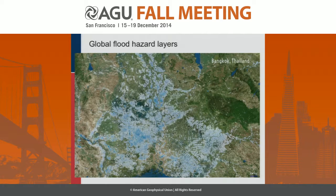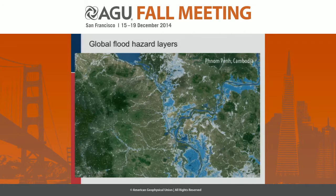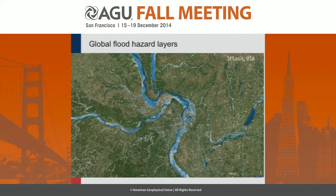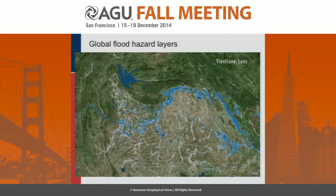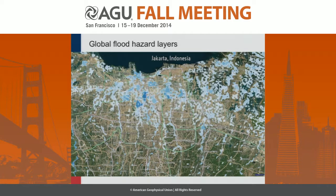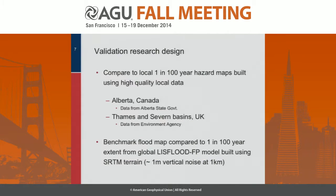That produces some really neat images. This is Bangkok at 90-meter resolution. Quite a lot of people in the audience have seen these already. Phnom Penh in Cambodia — again, really nice pluvial and fluvial simulations. St. Louis, USA, and Vientiane in Laos, and Jakarta in Indonesia — we're looking at one-in-100-year maps here in all of these. Those are all really nice, but the question then comes to scientists: are they any good? It's very nice to produce a pretty picture, but what's the model skill?